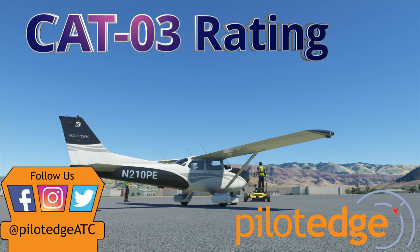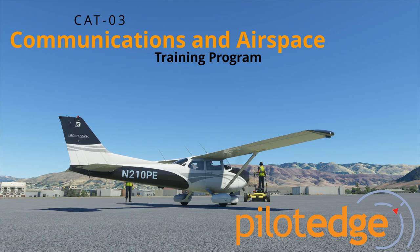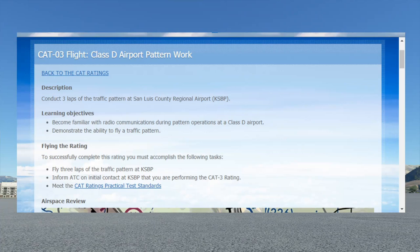Hello and welcome to the CAT-3 flight. This is the third flight in the series of the communication and airspace training program on the Pilot Edge Network. Today we just have a very simple three laps in the pattern, and we're going to be talking to air traffic control. It's really straightforward — just three laps in the simple traffic pattern at a towered class delta airport.